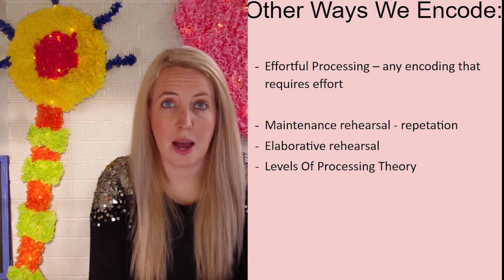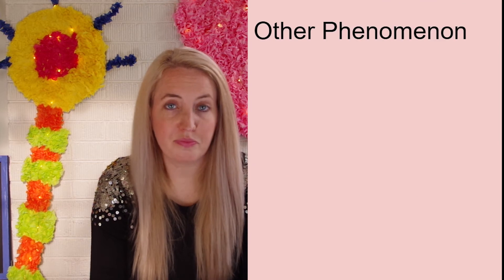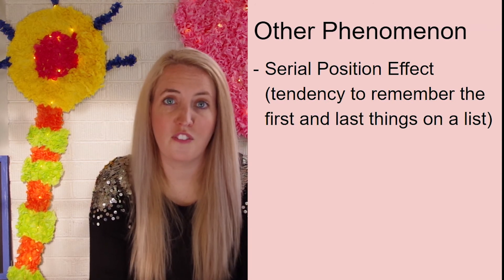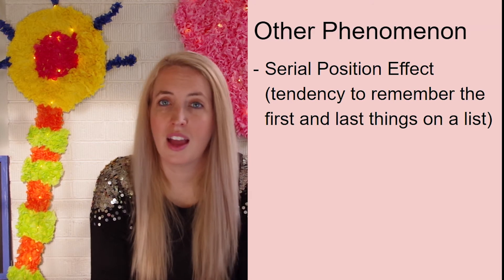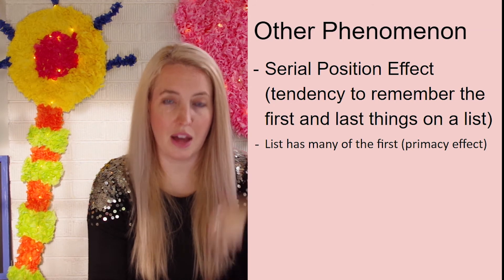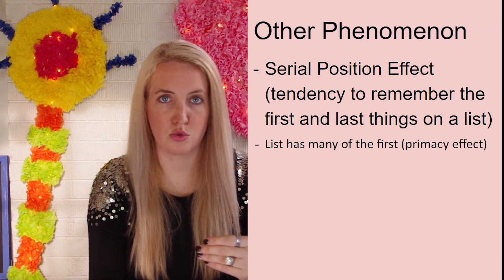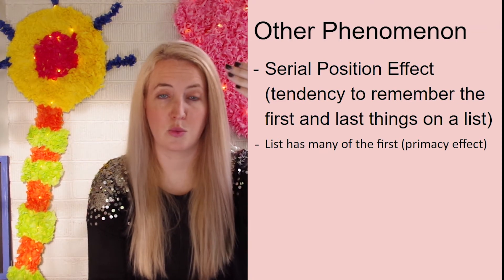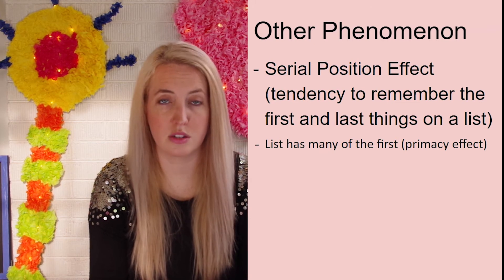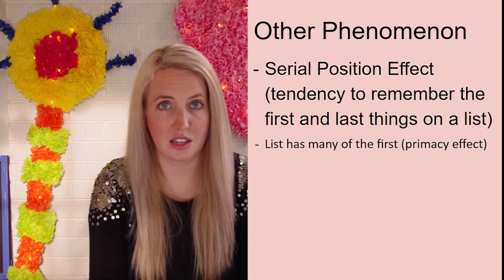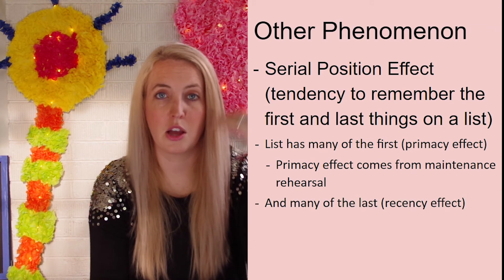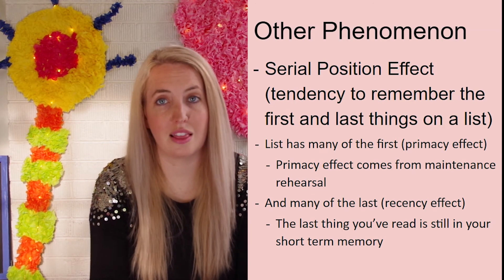There are also notable phenomena in memory. The serial position effect shows that when remembering items from a list, we tend to remember the first and last things more than the middle. We remember the first items due to the primacy effect — we rehearse them more. We remember the last items due to the recency effect — they were most recently seen. Together these explain why we typically remember the first and last things on a list.